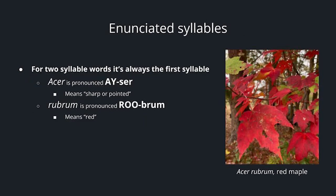Here we have Acer rubrum, which is our red maple. For two-syllable words, it's always the first syllable that gets enunciated — so it would be pronounced AY-cer. Acer means sharper-pointed, and rubrum means red — that's where the name comes from.